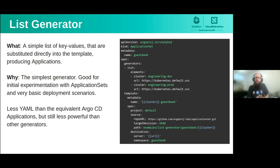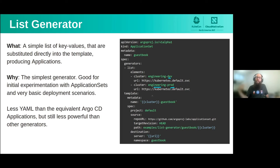The list generator is definitely the simplest generator — literally just a set of keys and values. Everything you want the template to do is hard-coded up front. It's the least reactive, but you can already see the power: in the last slide you had a single cluster, now you've got two. Just by adding two extra lines of YAML, we can deploy our guestbook application to a second cluster — an engineering dev cluster and an engineering prod cluster.